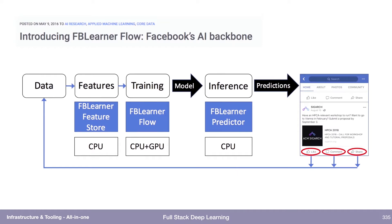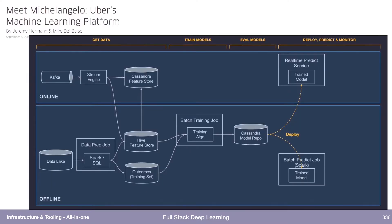I think the first public realization of this idea — that it should all be just one thing — was in 2016 with FB Learner Flow. That's Facebook describing their AI platform, which goes from data to features to training, to actually getting deployed on CPUs. It trains on GPUs, deploys on CPUs, monitors the predictions, and even connects the data flywheel — things like the like button and comment button — back into the data source.